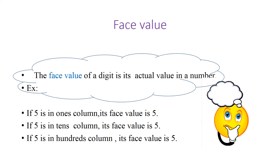Now let us go to the next topic, that is face value. The word itself says 'face.' The face value of a digit is its actual value in a number. For example, if 5 is in the 1's column, the face value is 5. If 5 is in the 10's column, its face value is still 5. We are not looking at which place it is in — whether 1's, 10's, or 100's. Whatever digit is in that position, that same actual value is the face value.